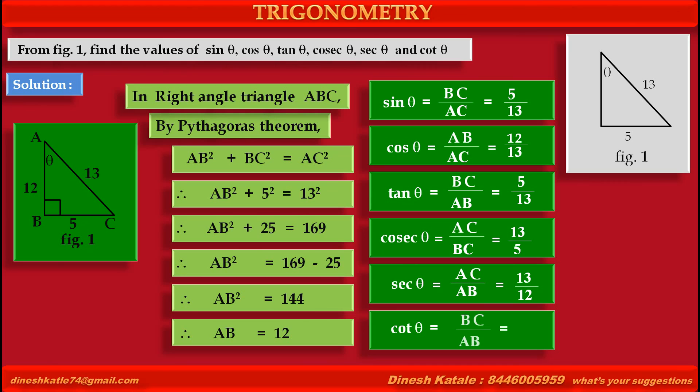Cot theta is equal to adjacent side upon opposite side, i.e. BC upon AB, is equal to 5 upon 12.